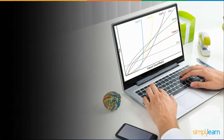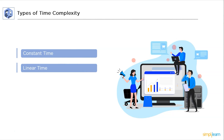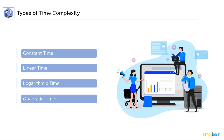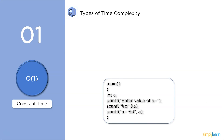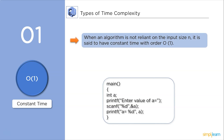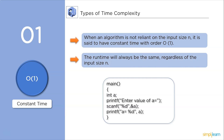Next up, types of time complexity. We will start with constant time complexity, then discuss linear, logarithmic, and quadratic time complexity. First, constant time complexity: when an algorithm is not reliant on the input size n, it is said to have constant time of order O(1). The run time will always be the same regardless of the input. As you can see in the code, every line has a run time of 1 and they are all independent of any input size, so the run time is always constant.